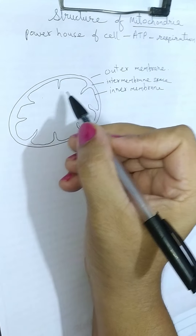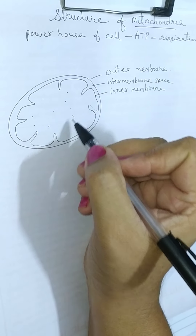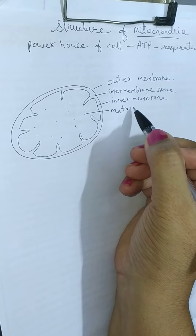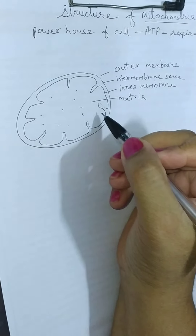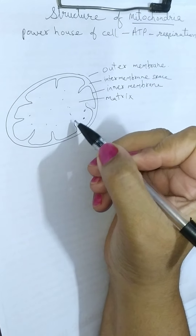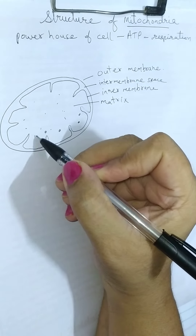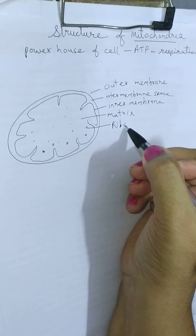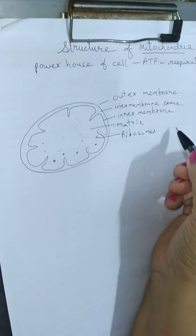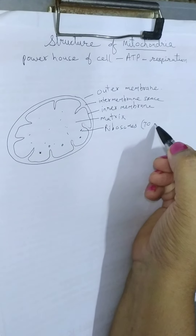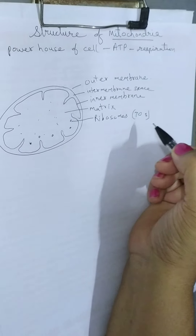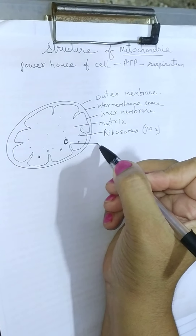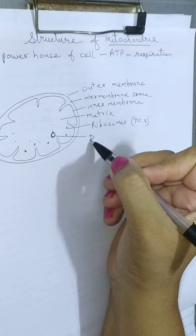The space inside the inner membrane contains a fluid called the matrix. This matrix contains many ribosomes — they are of the 70S type. It also contains circular DNA.